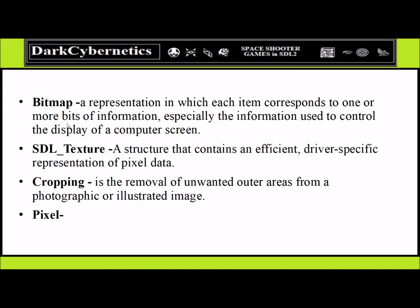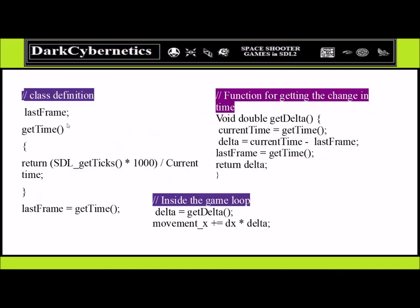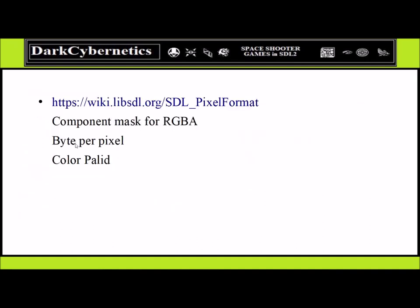For creating class definitions for a frame, inside the game loop we may need some type of delta or changing value to represent the idea of motion. Inside the function we need to get some type of delta value again. For those who want to use pixel data, we need to look at the documentation for the wiki page for SDL_PixelFormat. We need to know the mask color, the bit type of pixel, and the color palette, which is very important when we produce the game project.